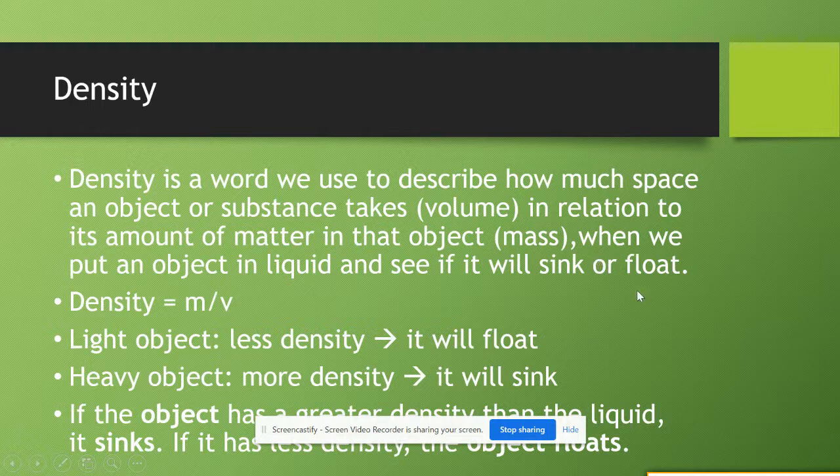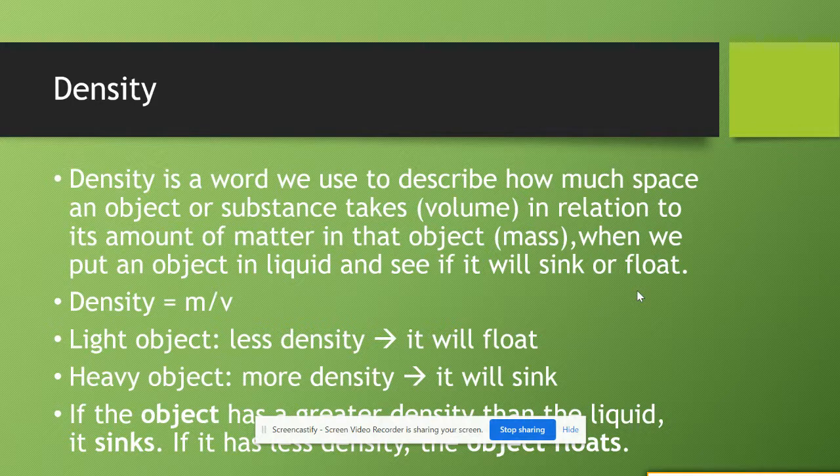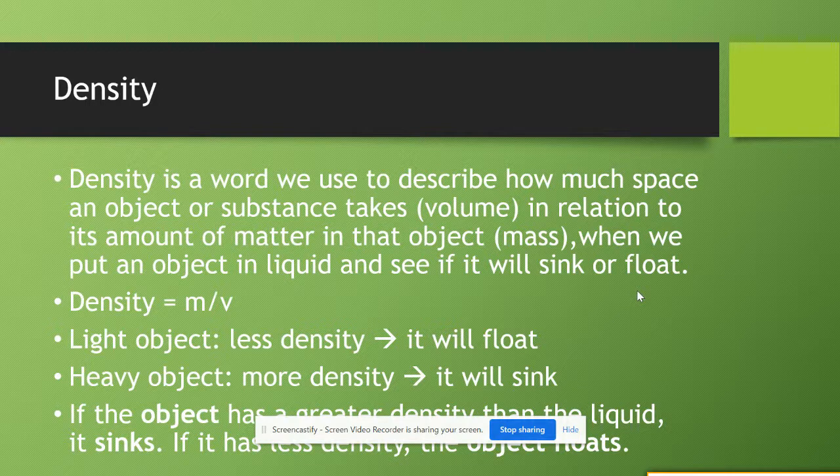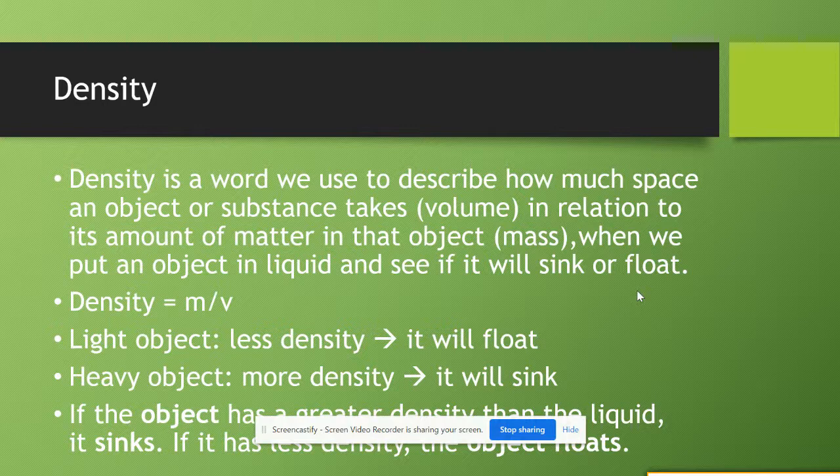All of us know that if I have any object float, it stays on the surface so it has less density than water. But if the object sinks, it has more density than the water. So if the object has greater density than the liquid it sinks, it goes down, but if it has less density the object floats.